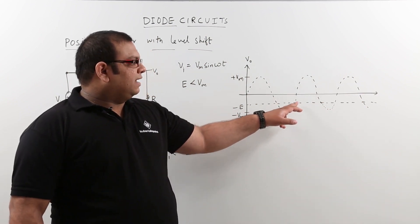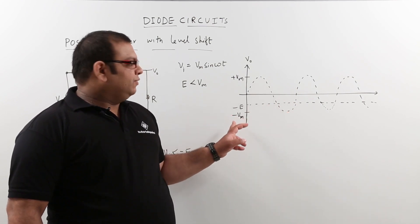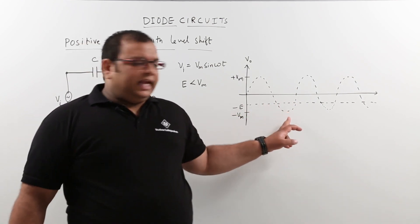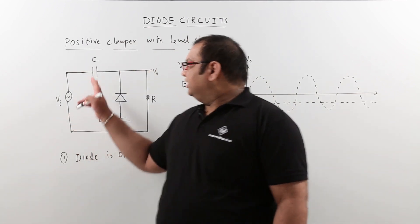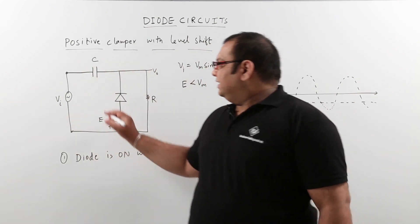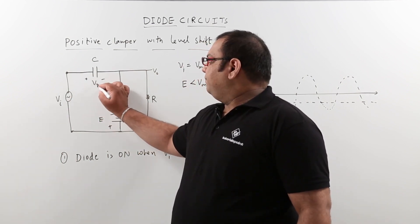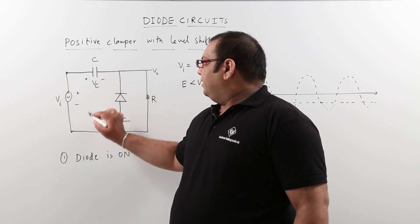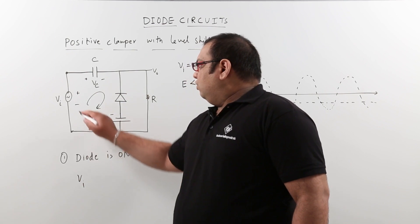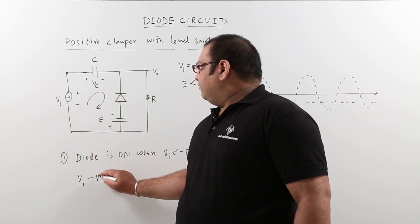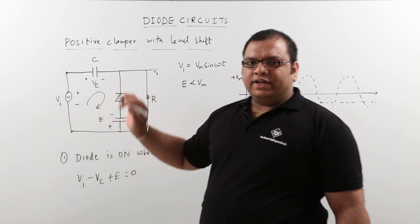During the conduction path, the diode conducts at the negative peak, which is minus Vm. So the maximum input voltage applied is minus Vm. At this point we calculate Vc by taking the loop equation: Vi minus Vc plus E equals 0. This is the loop equation when the diode is conducting.